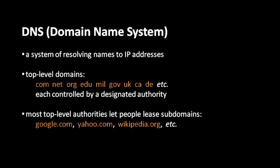Now, the obvious problem with IP addresses is that they are numbers, and numbers just aren't very human-friendly — they're hard to remember. And so, the DNS domain name system was invented. The DNS system is a system of resolving names, like yahoo.com, to IP addresses. Names in the DNS system are organized into what are called top-level domains. The most popular top-level domains include com, net, org, edu (which is short for education), mil (which is for military), gov (which is for government), and then you have some country codes for various countries, like UK for the United Kingdom, CA for Canada, DE for Deutschland for Germany.